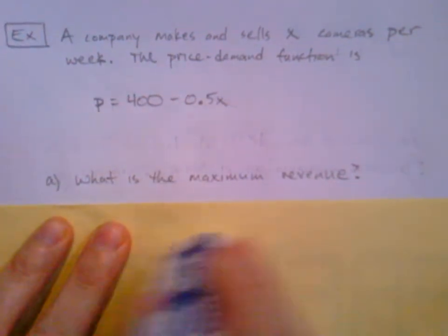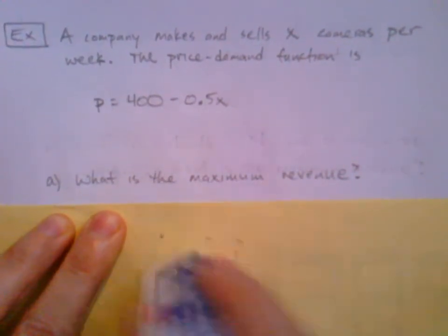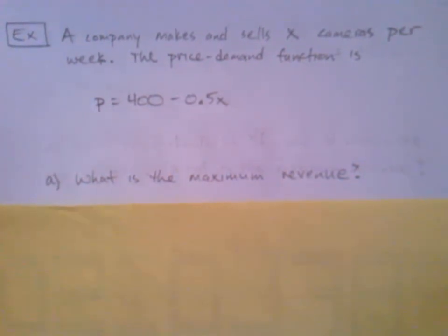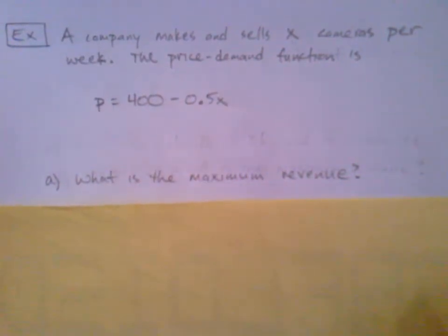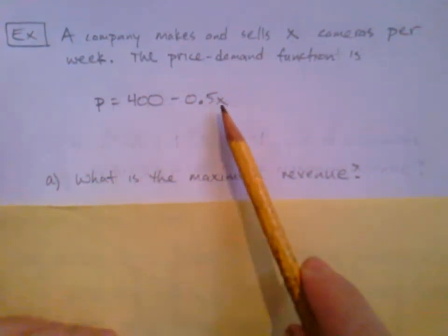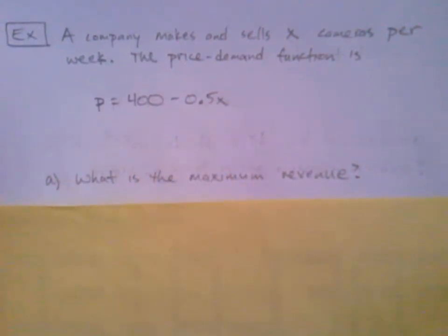What is the maximum revenue? Where did that come from? Well, obviously we might adjust how many cameras we make. That's going to change the price, which changes the revenue. So there's like a sweet spot. If we don't make enough cameras, we can't sell enough. We can't bring enough money in.